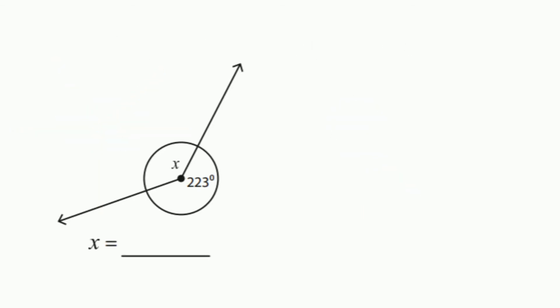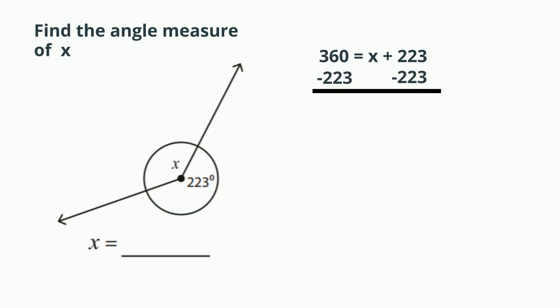For example, let's set 360 equal to x plus 223, then we just subtract 223 from each side. x becomes 137, so the missing angle measure is 137.